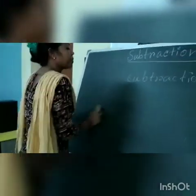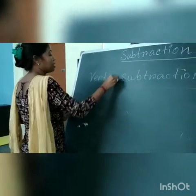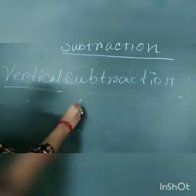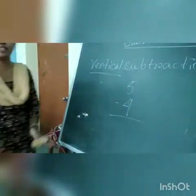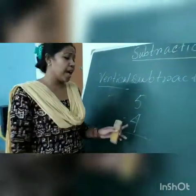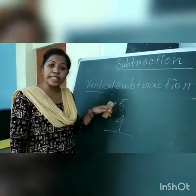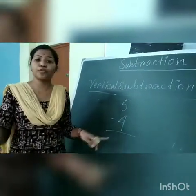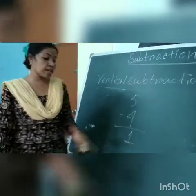The next method is vertical subtraction. For example, 5 on top and 4 below. This arrangement is known as vertical. The method is the same — by finger counting, we start counting after 4 up to 5. So after 4 comes 5, that is 1 house. The answer will be 1.